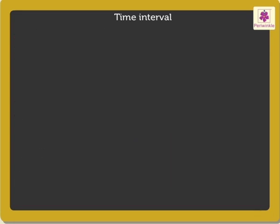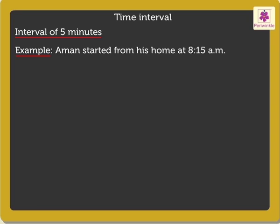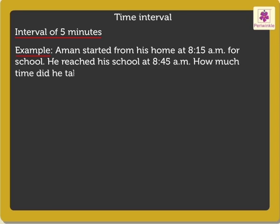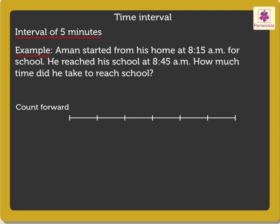Next, let us learn about interval of 5 minutes. Let us solve an example. Aman started from his home at 8:15am for school. He reached his school at 8:45am. How much time did he take to reach school? Here, we shall count forward, but this time the time interval for each count would be 5 minutes from the starting time, 8:15am.